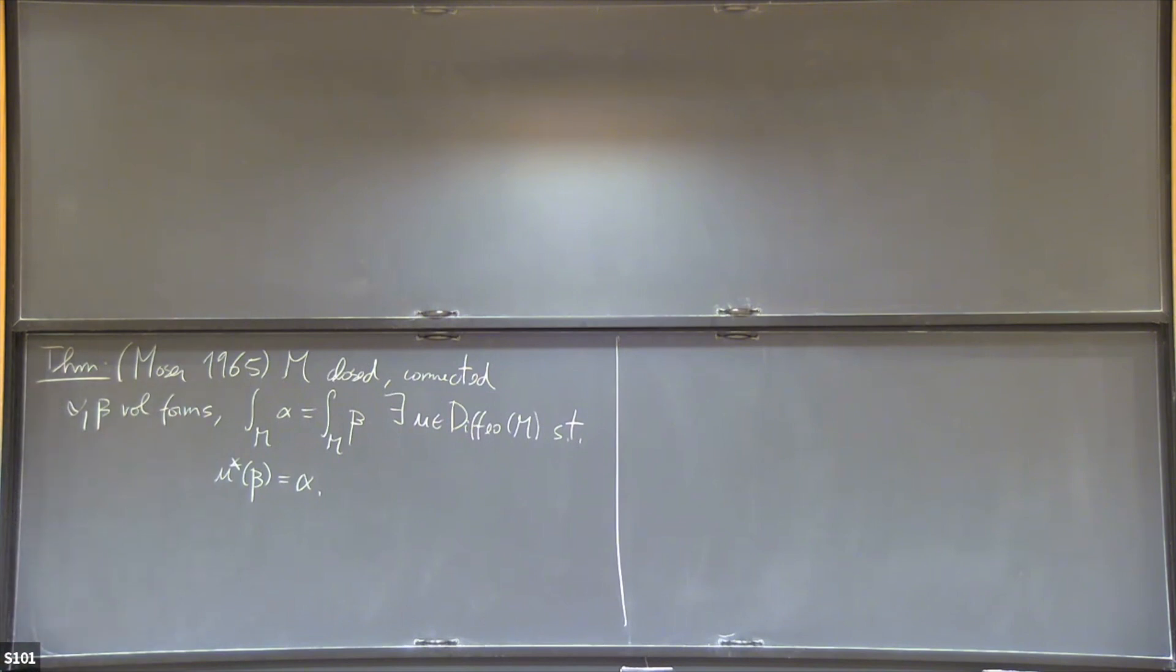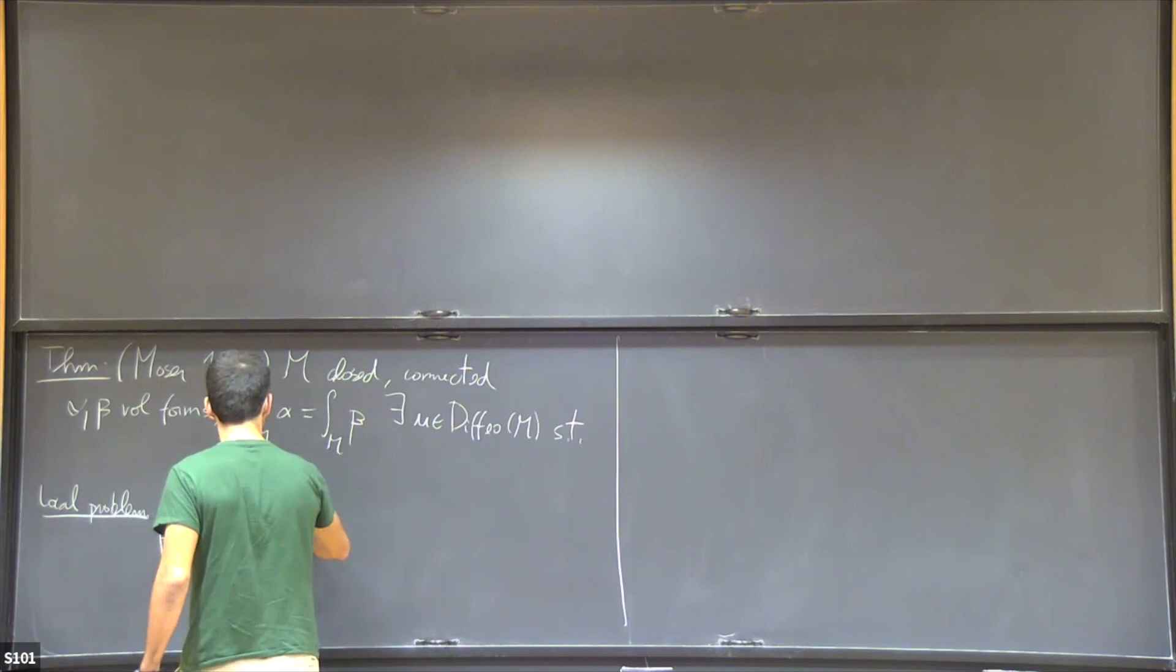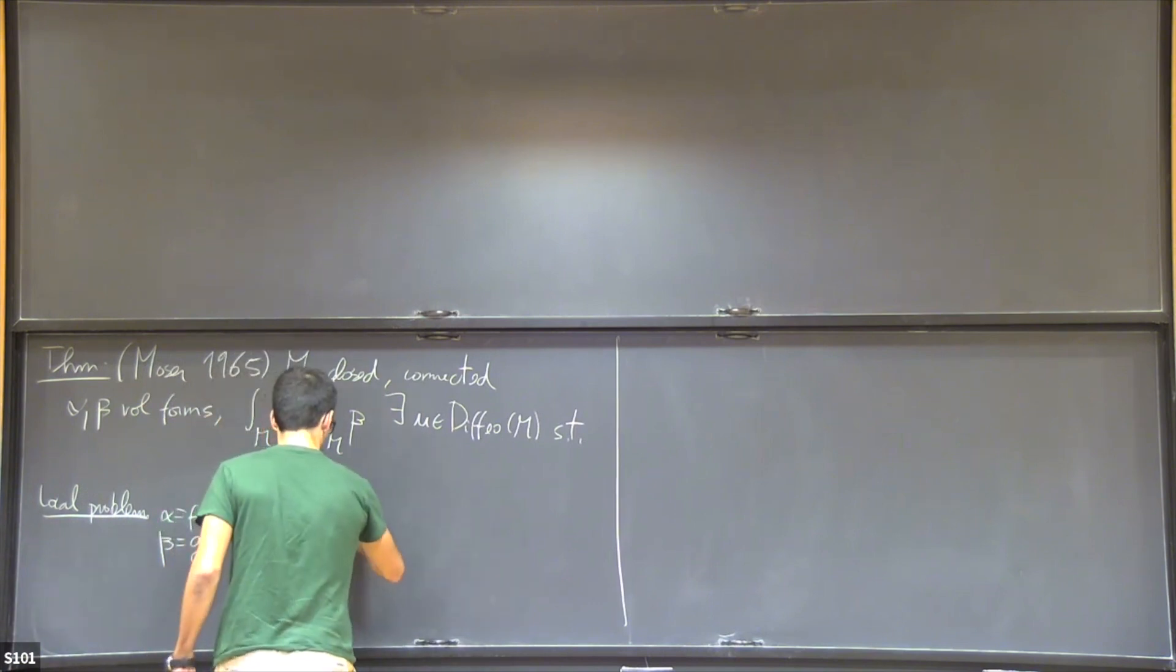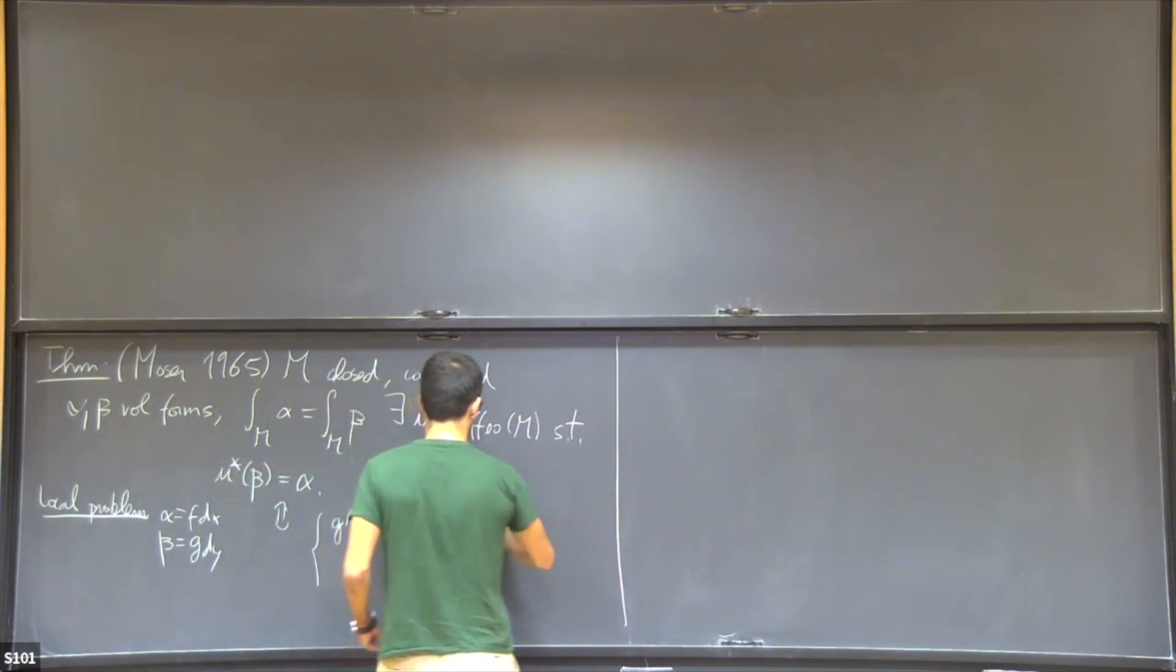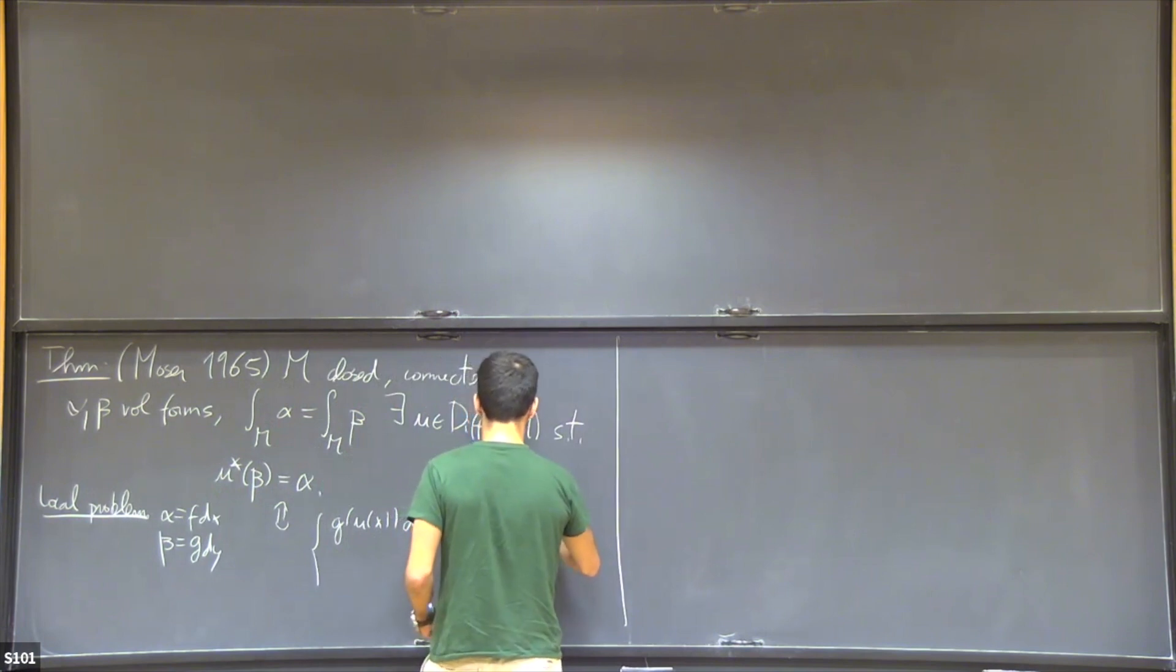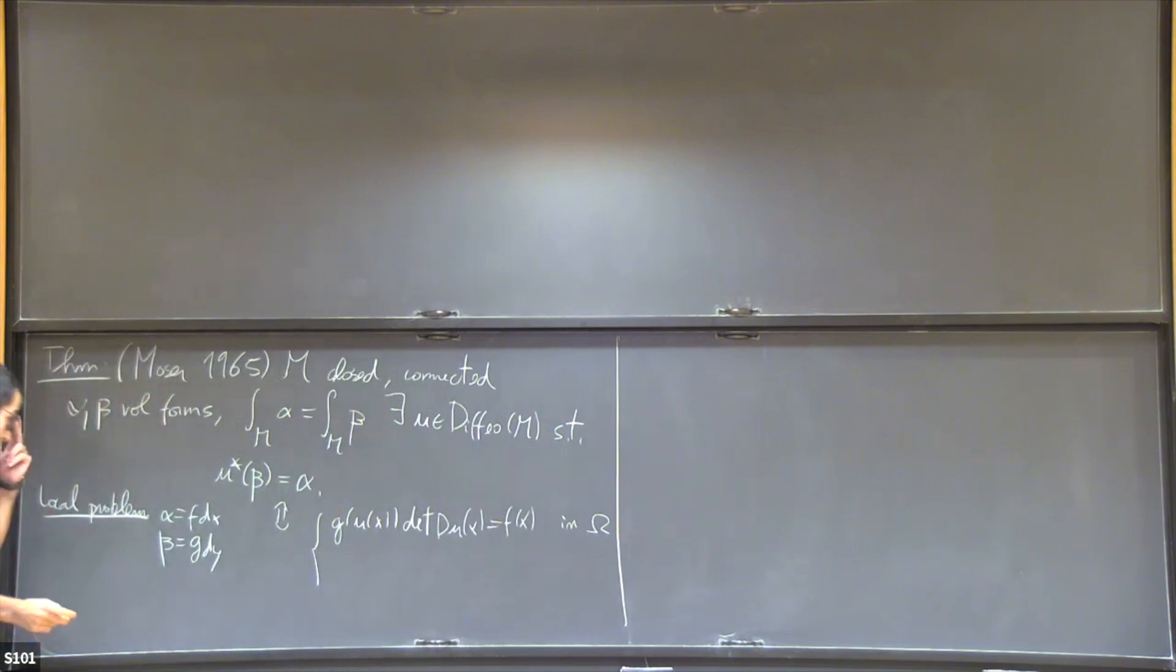If you don't like geometry, that's fine because actually this is really a local problem. In local coordinates, alpha is the form f dx and beta is the form g dy. Omega would be a coordinate chart, a nice domain.